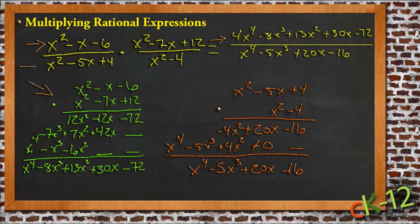And then we went along and multiplied the denominators of the fractions, x squared minus 5x plus 4 times x squared minus 4, and those steps are written down over here on the right-hand side, and we came up with this expression in the denominator.